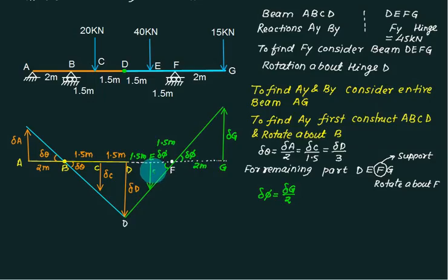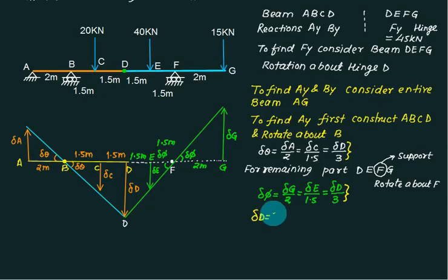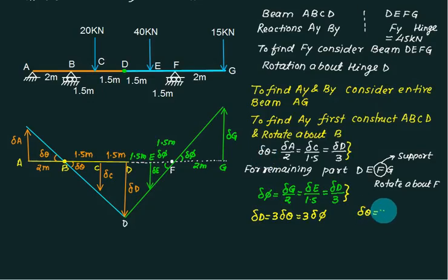Del Phi equals Delta G divided by 2, Delta E divided by 1.5, and Delta D divided by 3. Now find the relation between Del Theta and Del Phi. From the Del Theta equation, Delta D equals 3 times Del Theta. From the Del Phi equation, Delta D equals 3 times Del Phi. Therefore Del Theta equals Del Phi.